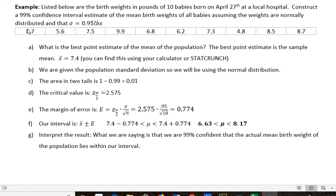First of all, I have 10 different weights of babies for a day. What is the best point estimate of the mean of the population? The best point estimate is the sample mean. So we're going to use a calculator or StatCrunch to find that mean. We add all those up and divide by 10 and we get 7.4.